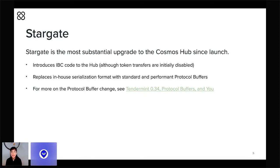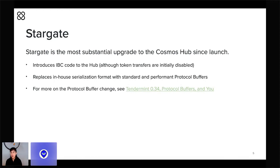The Stargate upgrade will introduce IBC to the Cosmos Hub, but it's also a massively breaking change because it changes Tendermint and Cosmos' encoding format — the serialization format used as a wire format and as a data storage format. The Stargate upgrade will change this wire format from something written in-house to something that is standard, stable, well-maintained, and a bit more performant. This change impacts projects all the way up the stack from Tendermint Core to the Cosmos SDK to Gaia to clients, wallets, and partners.